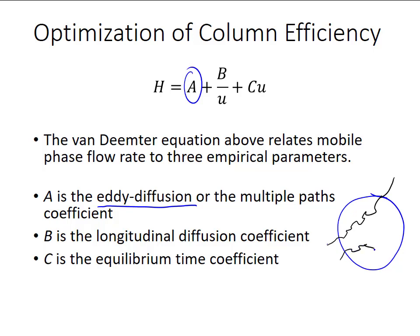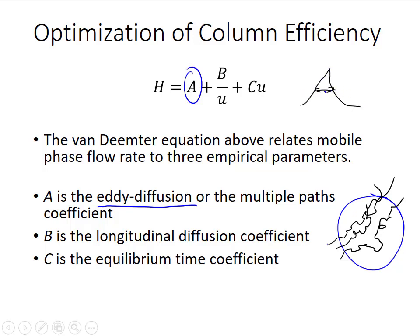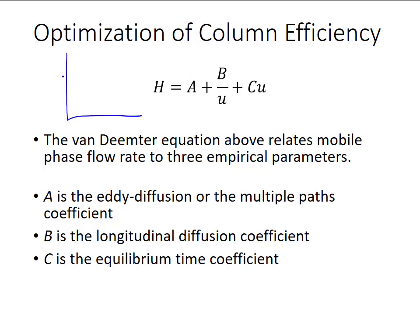Since some paths through the pores are a little longer and some a little shorter, some solutes will take a shorter path and some will take a longer path. This parameter A contributes to the diffusion or broadening of the peak. Plotted on its own, parameter A is a constant that is completely independent of flow rate.